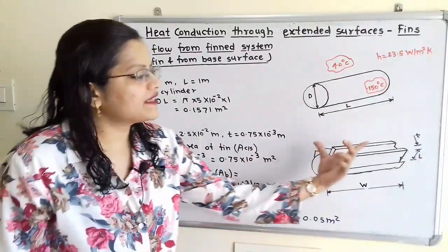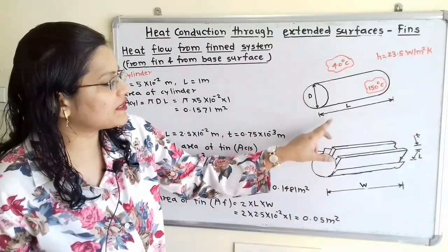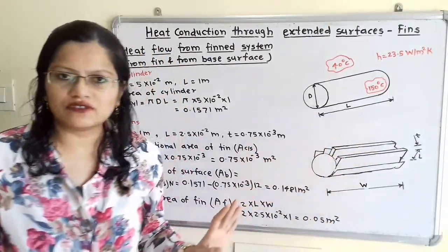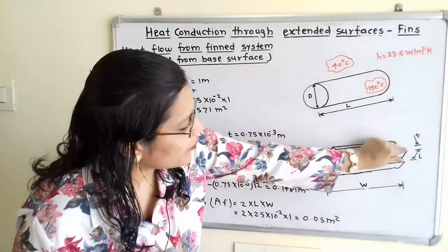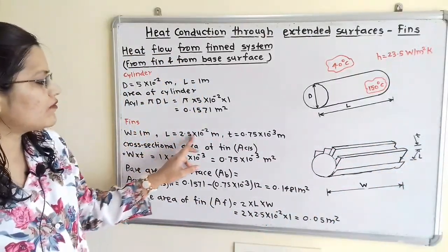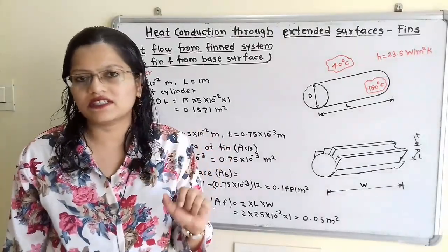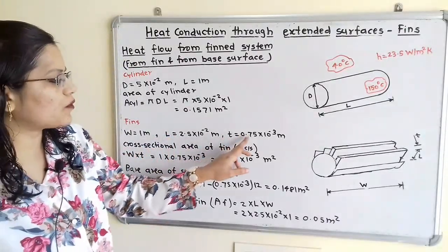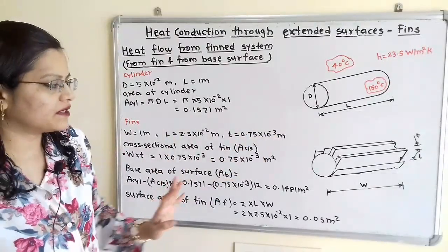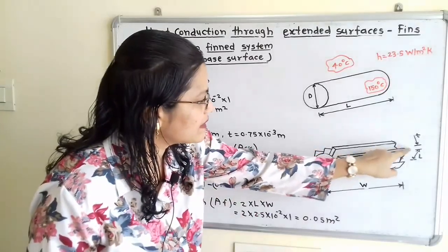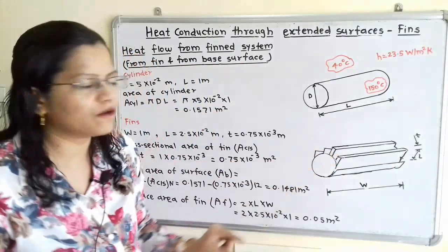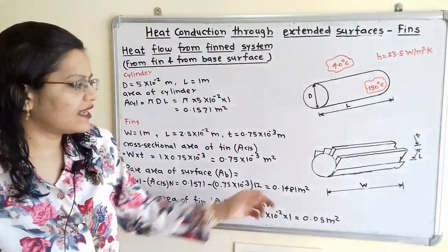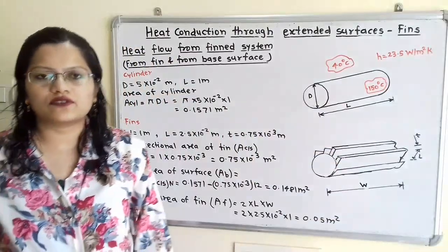If we observe the dimensions provided for the fins in the second diagram, the width is not separately mentioned, but from the diagram the length of the cylinder is the width of the fins. The fin protrudes from the base with length L = 2.5 × 10⁻² m, and the thickness of the fin is t = 0.75 × 10⁻³ m. In the diagram, t is the thickness and L is the length protruding from the cylinder base, while the total width equals the length of the cylinder.